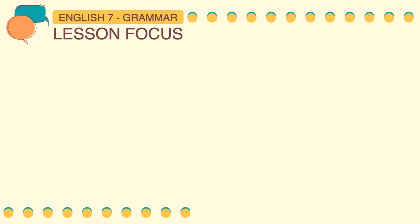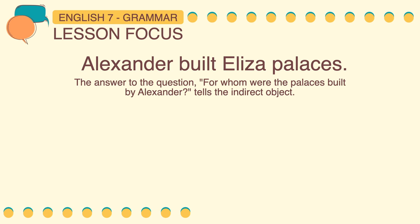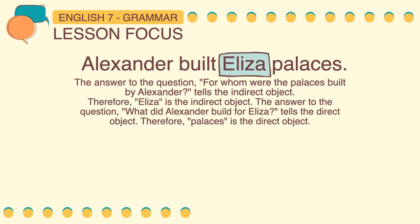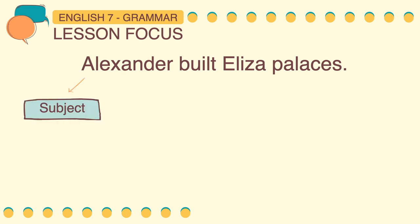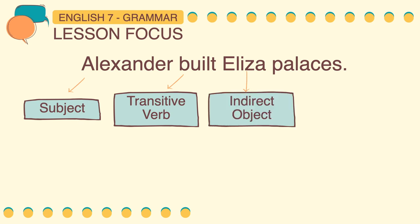Let's have another example: Alexander built Eliza palaces. The answer to the question for whom were the palaces built by Alexander tells the indirect object. Therefore, Eliza is the indirect object. The answer to the question what did Alexander build for Eliza tells the direct object. Therefore, palaces is the direct object. In this sentence, Alexander is the subject, built is the transitive verb, Eliza is the indirect object, and palaces is the direct object.